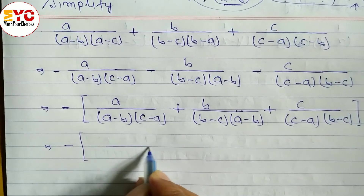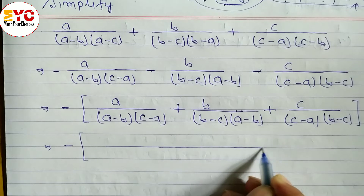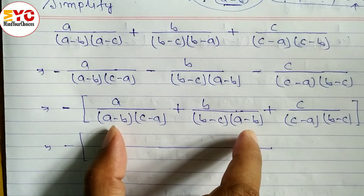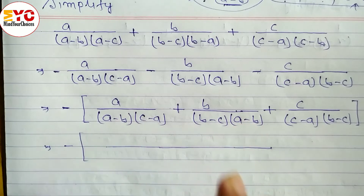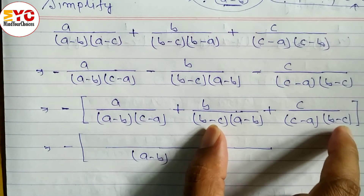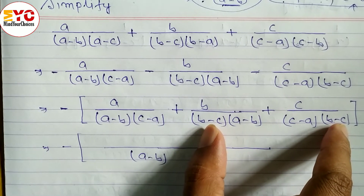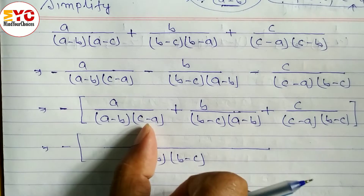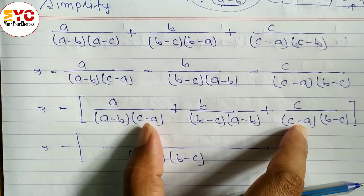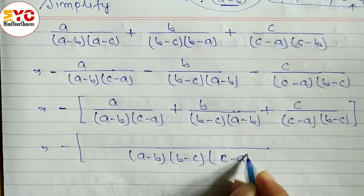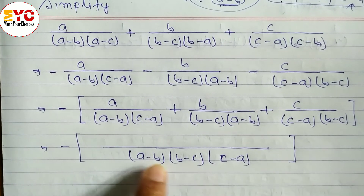We take LCM. The common factor a minus b appears, then b minus c, then c minus a. These are all the factors, so LCM is (a minus b)(b minus c)(c minus a).